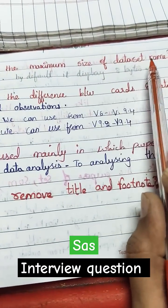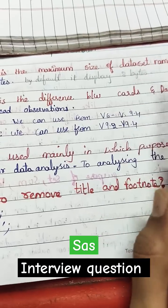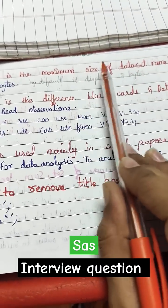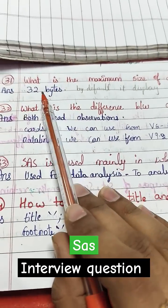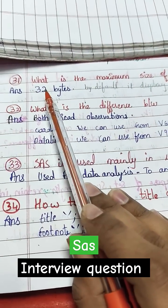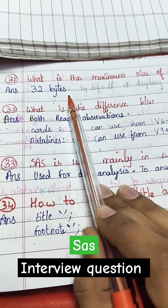What is the maximum size of a dataset name? The answer is 32 bytes. By default, it displays eight bytes.